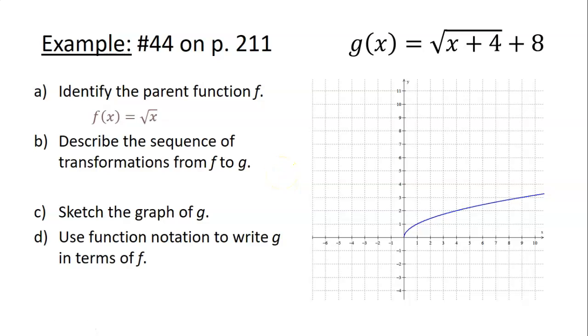Part b, describe the sequence of transformations from f, which is just the square root of x, to g, which is the square root of (x + 4) plus 8. What kind of shifting or stretching or reflecting do we do to get from f to g? Well, answer, we shift 4 spaces to the left and we shift 8 spaces up. And there's nothing going on here that would make us do any stretching or reflecting or anything like that. We just shift left 4, up 8.